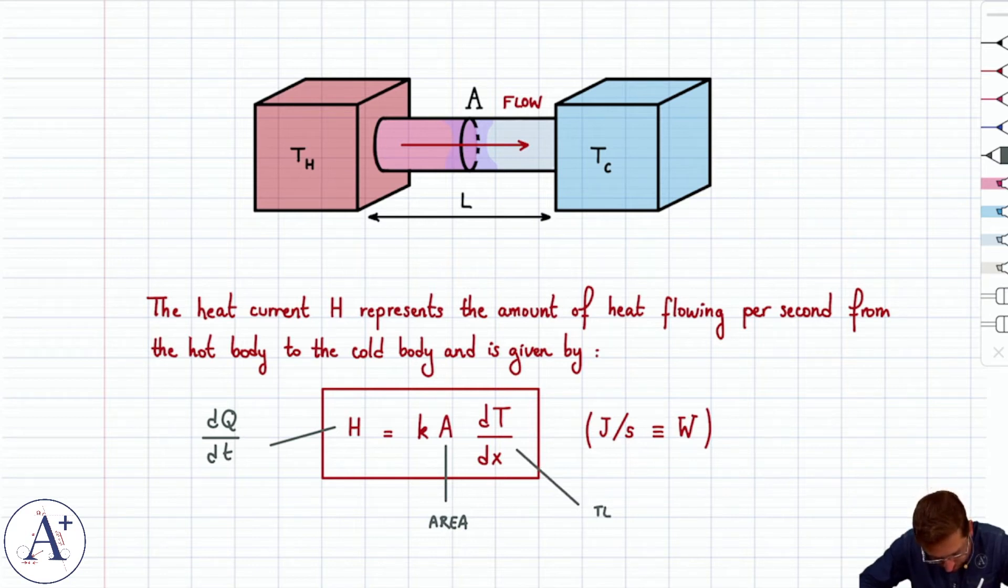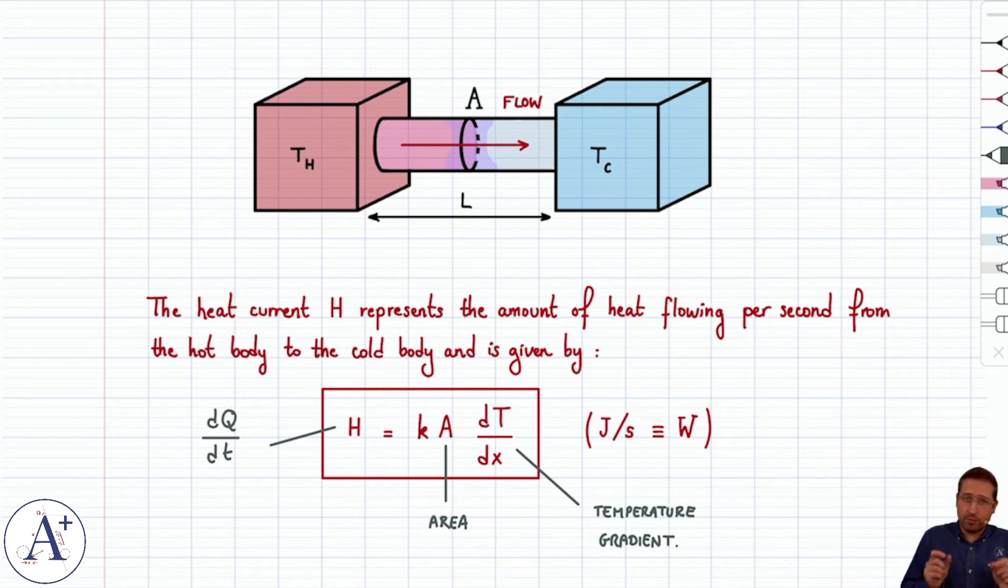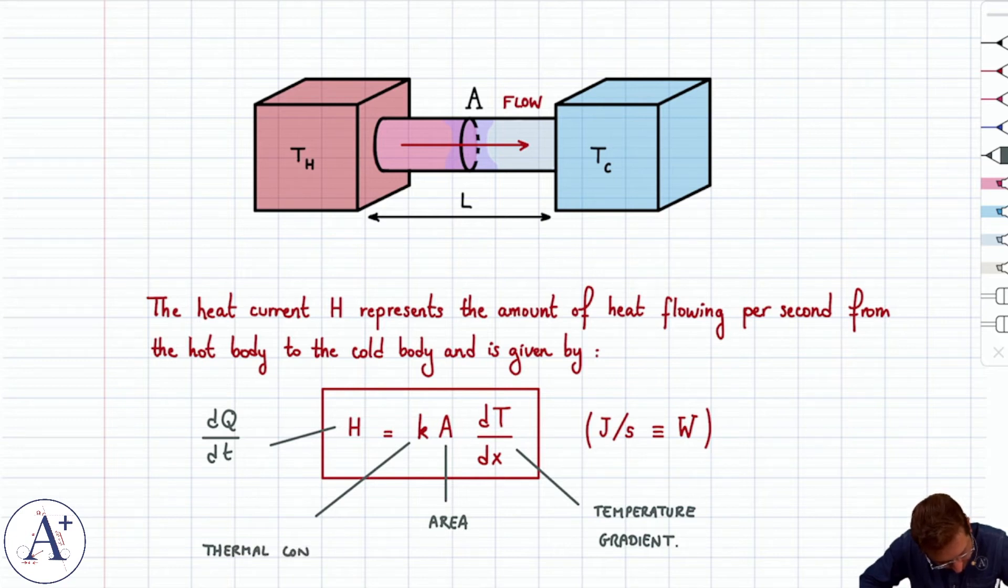DTDX is the temperature gradient. It is how quickly temperature varies with X, which makes sense because heat flow is dictated by a temperature difference between the bodies. And then finally, K is called the thermal conductivity, and that's a property of the material through which you have conduction.